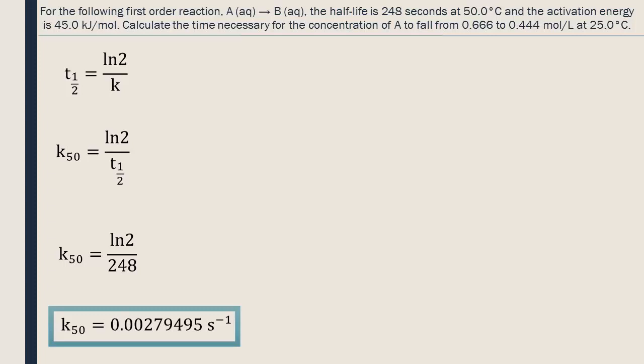The half-life was given in seconds, so the rate constant has seconds to the negative exponent as its units. We will keep our answer with as many digits as possible to avoid rounding errors.